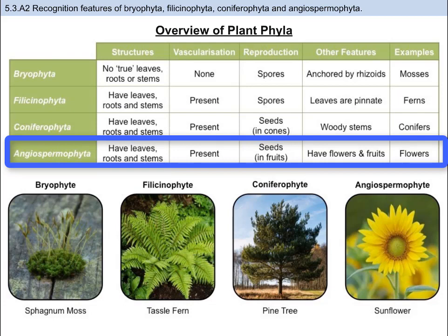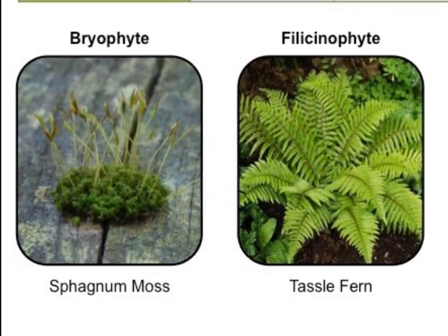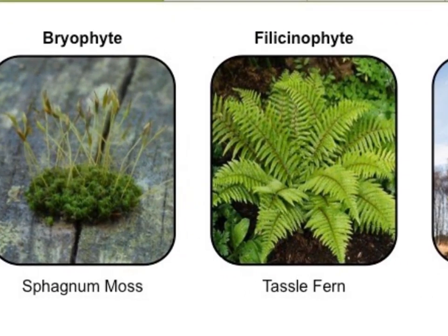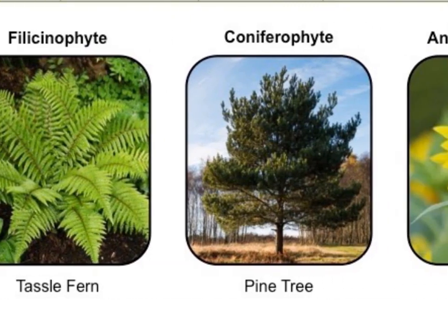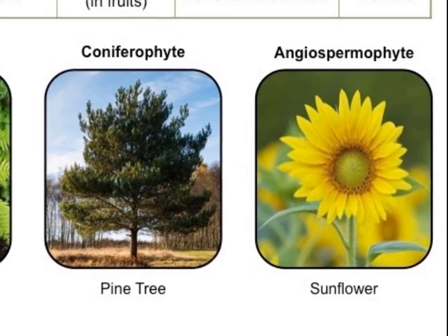Lastly, we have Angiospermophyta, or angiospermophytes. These have vascularization, roots, leaves, and woody stems. Different from all the others, these are characterized by their ability to have flowers and also to have fruits which contain seeds. These include all flowering plants and grasses — think fruit trees and grass. You must be able to compare and contrast these four phyla as well as identify them based on look and characteristic. In terms of evolution, the oldest are the bryophytes and the newest are the angiospermophytes.